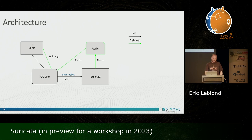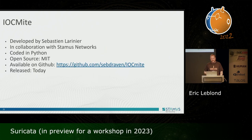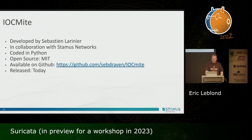So how does Yosemite work? We've got MISP, and Yosemite fetches from the REST API the information and uses the Unix socket to send the information to Suricata. We can use Redis or just a single file to send back alerts and read them in Yosemite to do sightings — which means we can use the sightings capability of MISP to say that we have seen this new IOC on the system and enhance your protection. Yosemite is developed by Sébastien Larignier in collaboration with me at Stamus Networks. It's developed in Python, it's open source, and it's available on GitHub at the following URL.